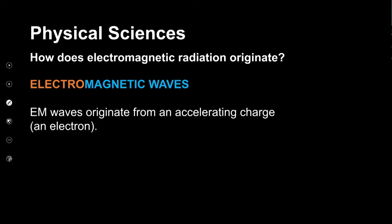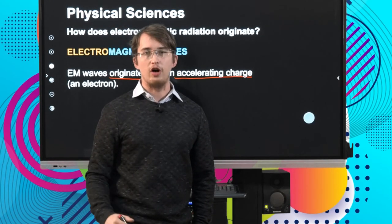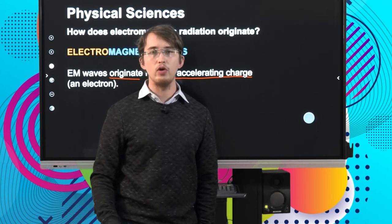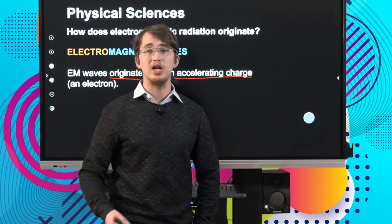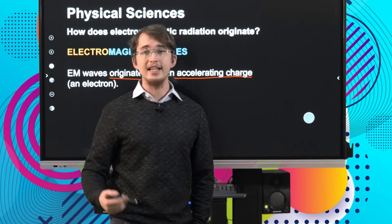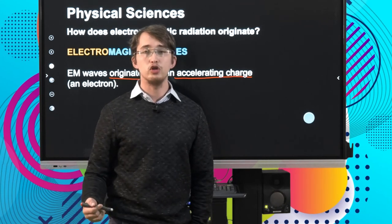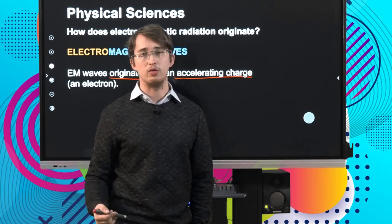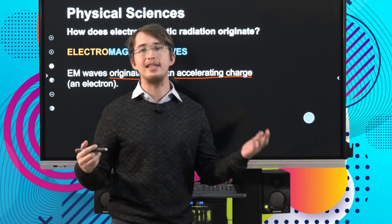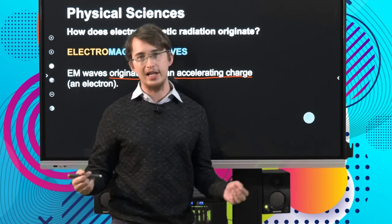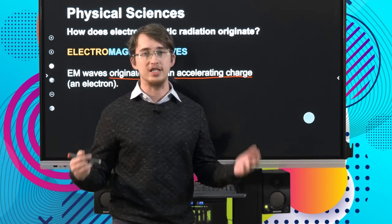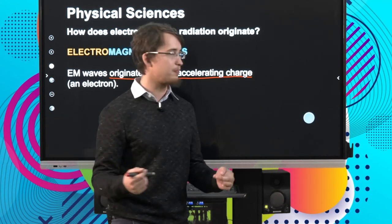But where do these electromagnetic waves originate from? They originate from an accelerating charge. In our investigation of physics and chemistry we've only seen two types of charged particles: protons, which have a positive charge, and electrons, which have a negative charge. Since getting to a proton trapped inside a nucleus can be quite difficult, when we look at the propagation of electromagnetic radiation we focus quite a lot on the role played by the electron — a negative charge that accelerates is what causes or generates most of the electromagnetic radiation we have discussed.